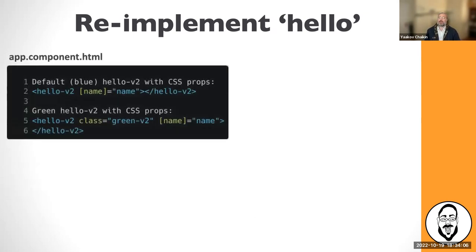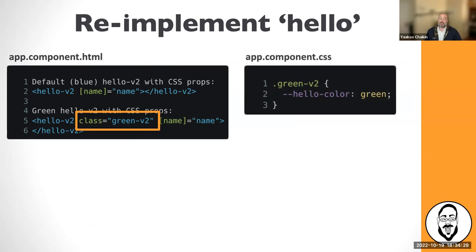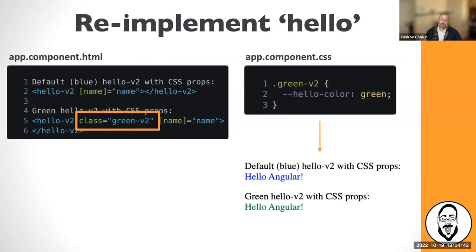Back in app.component.html, we use the component twice — once without specifying anything, so it gets the default blue, and once with the class 'green-v2'. What does that class do? All it does is define '--hello-color' as a CSS property. There's nothing else to do. We've now pierced the actual shadow DOM using a standards-based approach, and the component shows up in green.